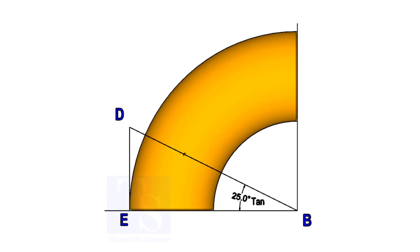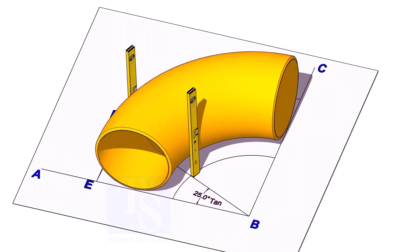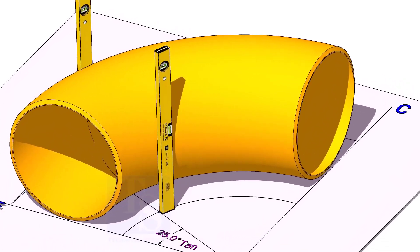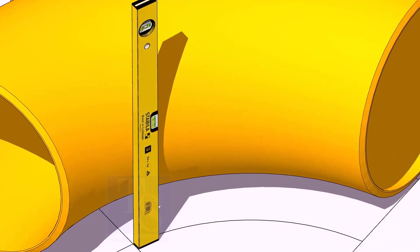Now, put the elbow exactly on the layout as shown. Hold two large level bottles at the edge of the elbow on both sides vertically. And strike a mark where the level bottle edge touches the elbow.